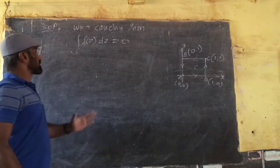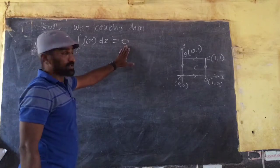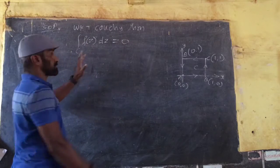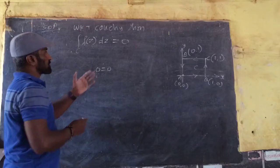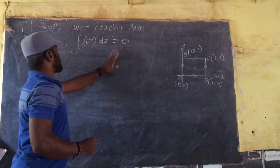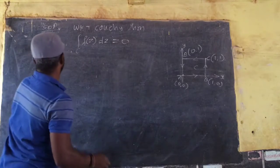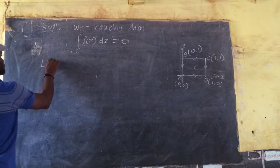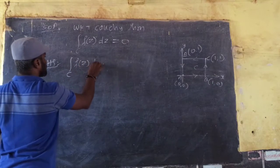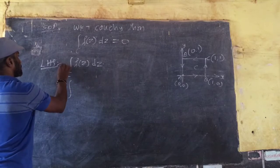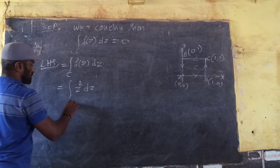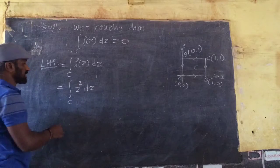Verify Cauchy theorem. We know that RHS is already 0. For the function to be verified, LHS part needs to equal 0. So, this shows that we verify Cauchy theorem. So what is the function? Take LHS. So, LHS is the integration of C, F(z) dz — that is equal to the integration of z² dz, where C is a square.